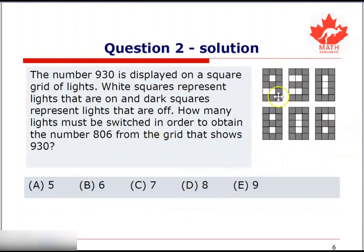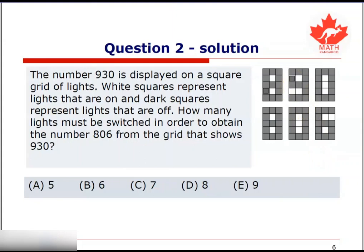Now let's look at the first digit. How do we turn this nine into eight? Well, we can do that by switching off this light over here. Now, how do we turn this three into zero? We can do that by turning off these two lights and turning on this light. And finally, how do we turn this zero into a six? Well, by turning on this light and turning off this light.